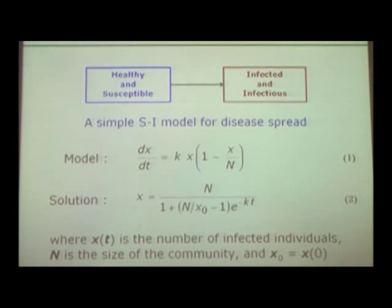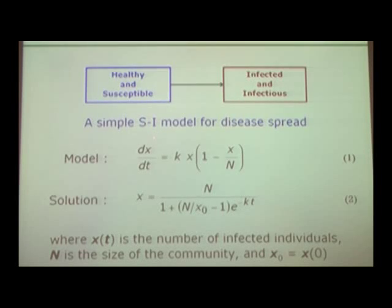My third example, which is also more relevant to the H2, H3 mathematics, is on a disease outbreak. A very simple model for a communicable disease goes like this. It's called the SI model or the susceptible infected model. We have a healthy susceptible individual becoming infected or an infectious. Infected means you have the disease. Infectious means you are able to transmit the disease to someone else. So this is a very simple model. We call it SI model. And the model can be written in this form, and I think many of you will recognize that this is nothing but the logistic equation.